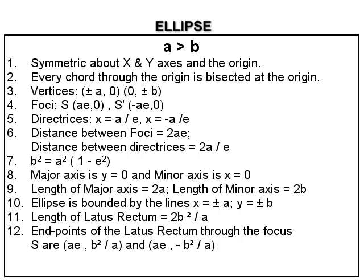Here we have b² equal to a²(1 − e²). After rearranging the terms, we get e equal to the square root of (a² − b²) divided by a. The equation of the major axis is y equal to zero, and the equation of the minor axis is x equal to zero. The length of the major axis equals 2a and the length of the minor axis equals 2b. The ellipse is a closed curve bounded by four sides of a rectangle whose equations are x equal to ±a and y equal to ±b.